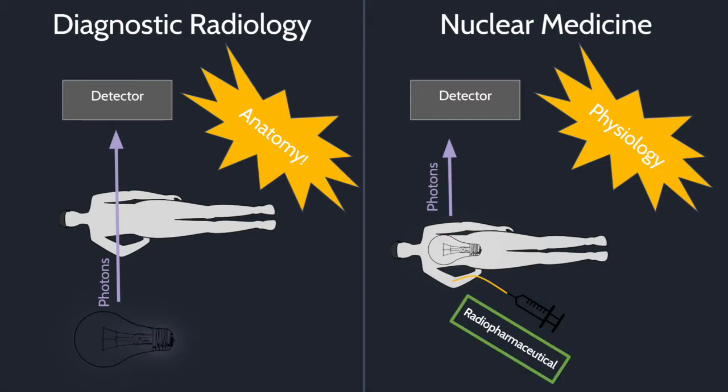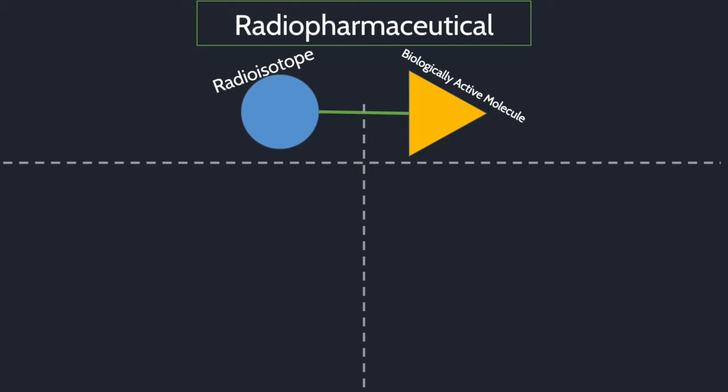First, let's look at what a radiopharmaceutical is. All radiopharmaceuticals are comprised of two basic components: a radioisotope and a biologically active molecule. The radioisotope is a radioactive element. The biologically active molecule localizes that isotope to the physiology we want to image. Sometimes isotopes don't need a separate biologically active molecule as it will localize by itself, such as iodine, which will go to the thyroid.